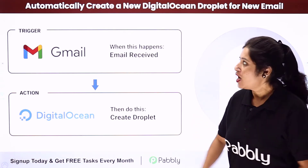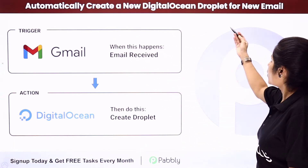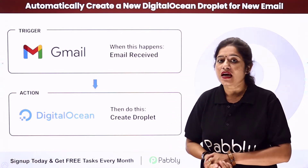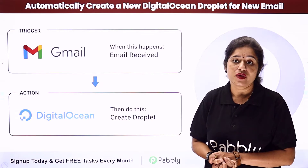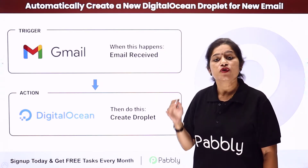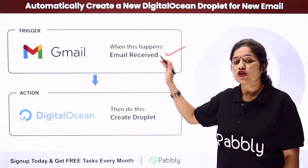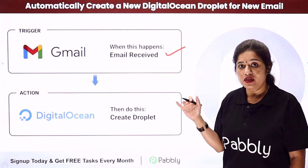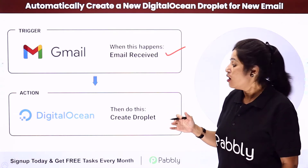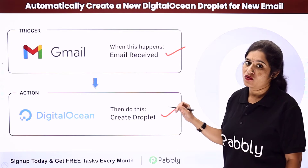In this video, we are going to learn how you can automatically create a new DigitalOcean droplet for a new email. The idea here is that your customers are sending you configuration requests for creating new droplets via email. Whenever you receive a new email, the mail should be sorted based on specific keywords and then, as per the requirement of the customer, a new droplet should automatically get created in your DigitalOcean account.